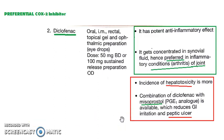In this video we are trying to understand COX-2 inhibitors. We have already seen the preferential COX-2 inhibitor diclofenac. Diclofenac has a potent anti-inflammatory effect because it is a COX-2 inhibitor, and it gets concentrated in synovial joints. Hence you can use it for treating joint pain.